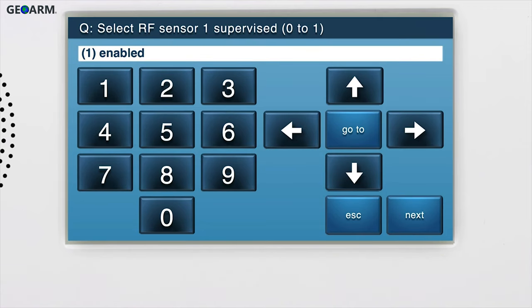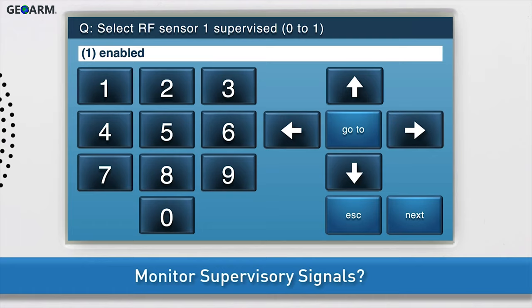Next, decide whether or not you want the panel to monitor supervisory signals of the carbon monoxide detector, such as low battery, tamper, and more. Select 1 enabled to activate this feature. Press the down arrow to go to the next sub-question.